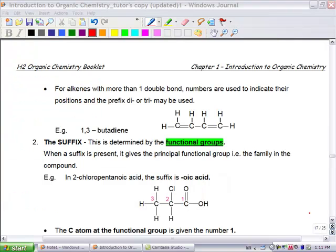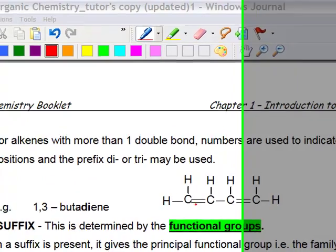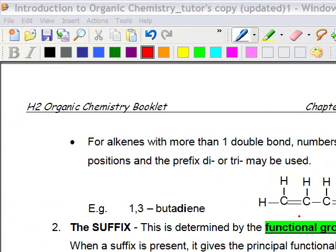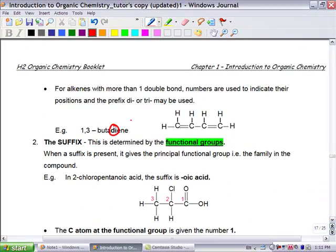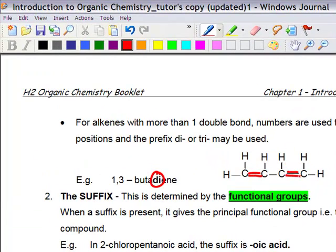For chains with more than one double bond, numbers are used to indicate their position and the prefix di- or tri- may be used. Let us look at this example of 1,3-butadiene. Di- because there is the presence of two double bonds. And 1,3 is derived because the first double bond appears on the first carbon, whereas the second double bond appears on the third carbon.